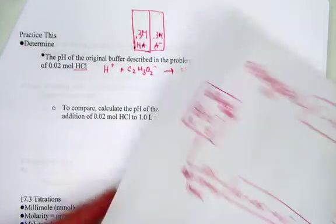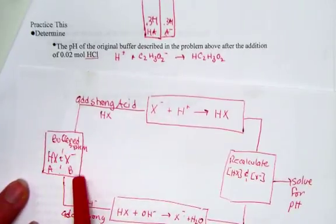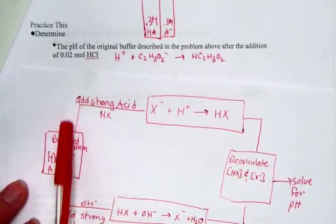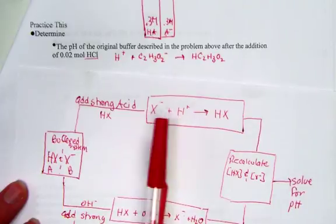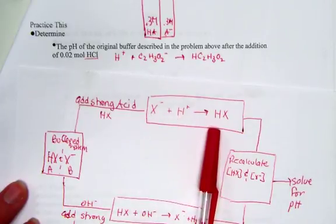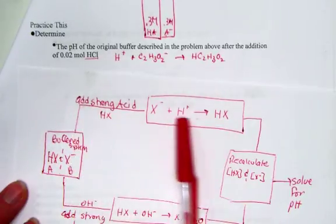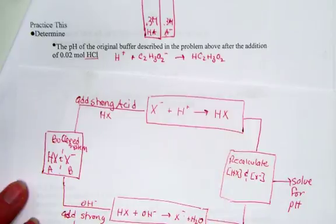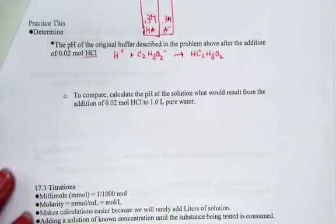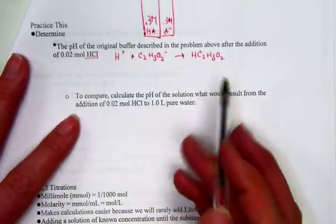Visually, let's make sense of what we just said. If this is our buffered solution, which we drew a moment ago, and we're adding strong acid, the acid reacts with the conjugate base, producing even more of the conjugate here, acetic acid. Adding strong acid produces more acid in the buffered system. That makes sense. We're pointing at the acetic acid.